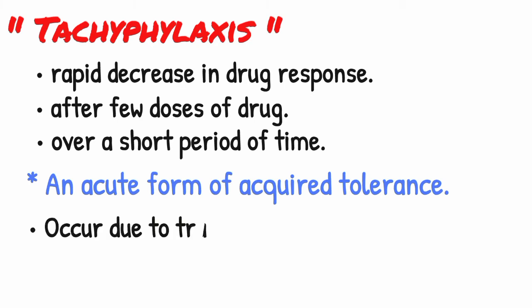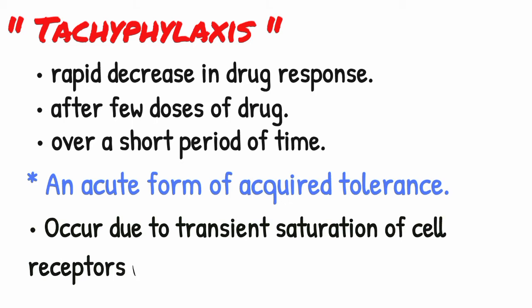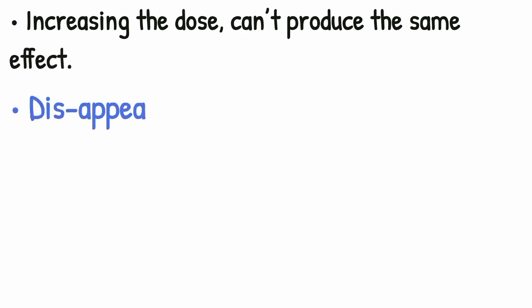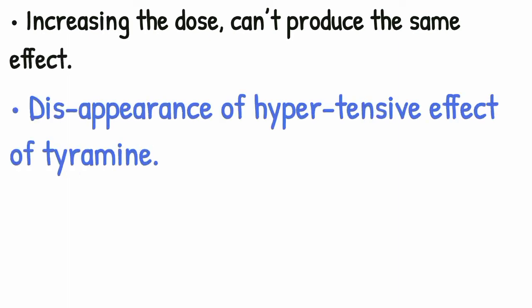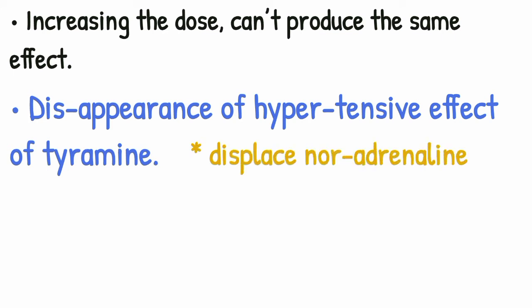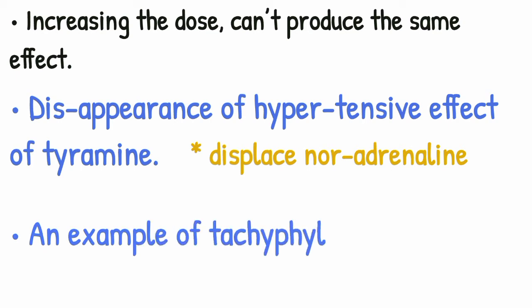Tachyphylaxis probably occurs due to transient saturation of cell receptors with the drug, and increasing the dose cannot produce the same effect. Disappearance of the hypertensive effect of tyramine, which is released and displaces noradrenaline from adrenergic neurons, is an example of tachyphylaxis.